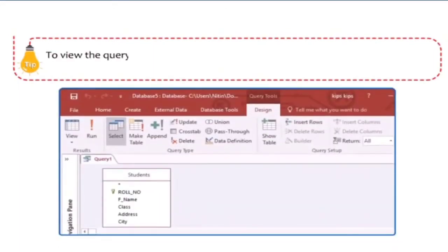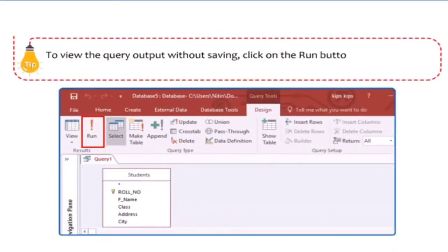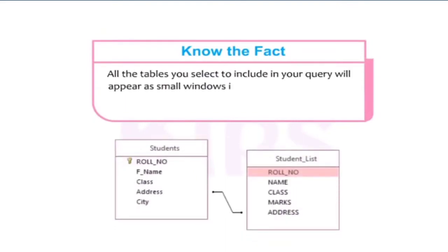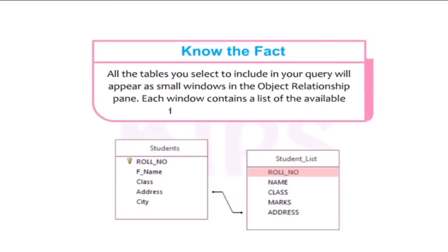To view the query output without saving, click the Run button in the Results group on the Design tab. All the tables you include in your query will appear as small windows in the object relationship pane, each containing a list of available fields within those tables.